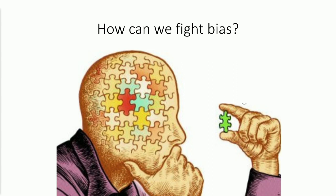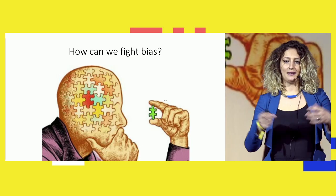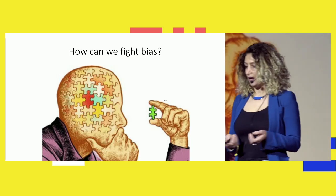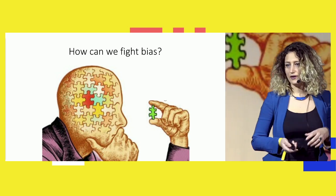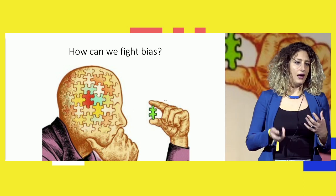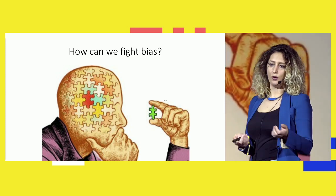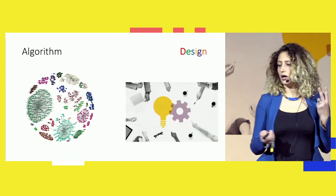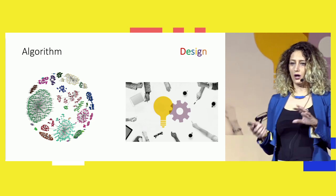These examples show how the data we feed to algorithms risks mirroring existing biases and stereotypes in our world. So the question is: how can we fight bias? It is possible, but very challenging. I'll present some solutions for AI systems using machine learning in order to overcome bias in your models or data. You have two facets to attack: algorithmic and design.